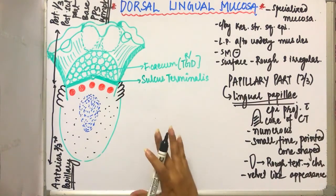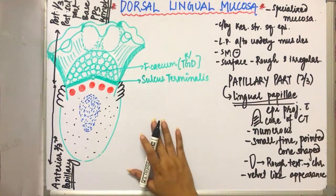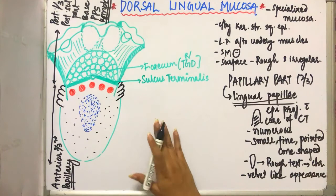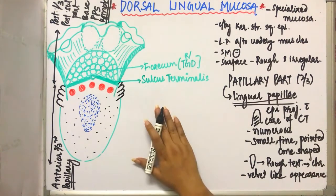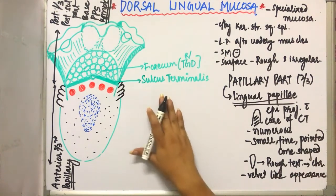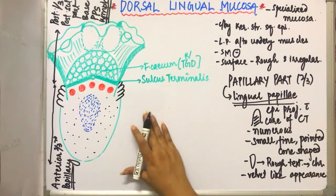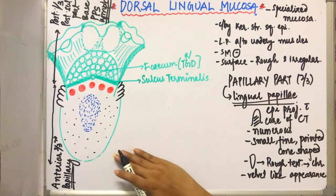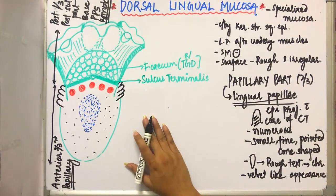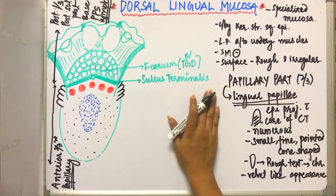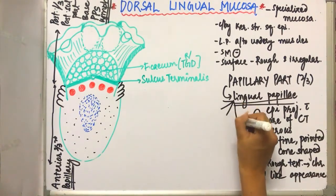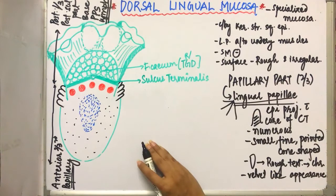These lingual papillae are epithelial projections with the core of connective tissue. They are numerous in number, small, fine, pointed and cone-shaped. This gives the tongue its characteristic rough texture and they have a velvet-like appearance. These lingual papillae are of four types.